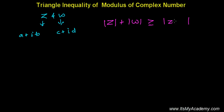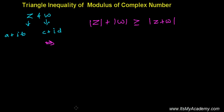Let me say it once again: the sum of the individual absolute values of the two complex numbers is always greater than or equal to the absolute value of the sum of those two complex numbers. So let's examine whether this is true or not.